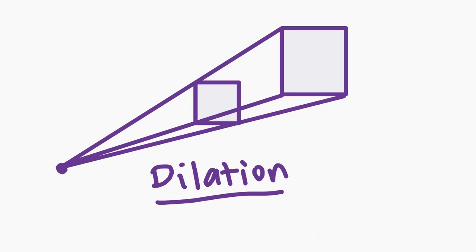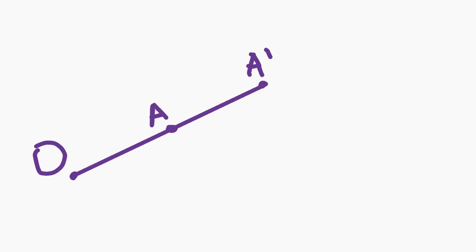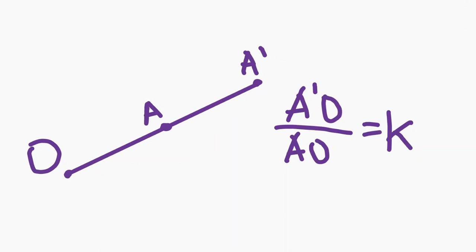We can define this in a more precise way by saying that a homothety exists at a point O with ratio k when each point A is sent to a point A prime that lies on AO, and the ratio of A prime O over AO is k. Sometimes k can be negative, and we'll see an example of that later.